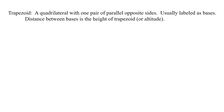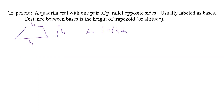The next application is a trapezoid — a quadrilateral with one pair of parallel opposite sides, usually called the bases. The distance between the bases is the height, also called the altitude. Base one is the bottom, base two is the top, and h is the height. The area formula is: area equals one half times the height times base one plus base two.